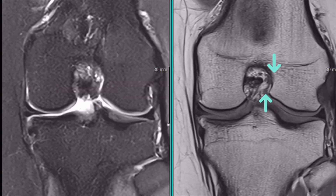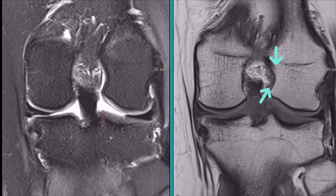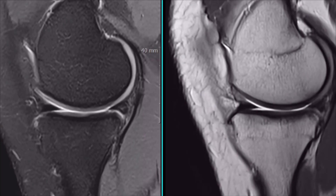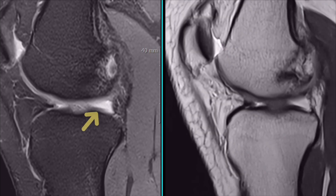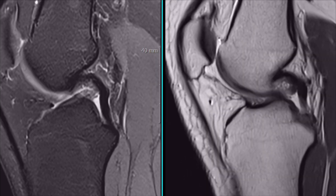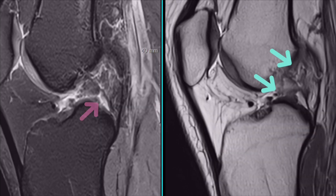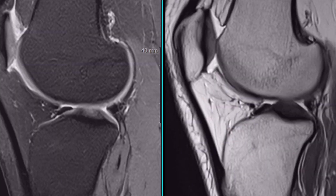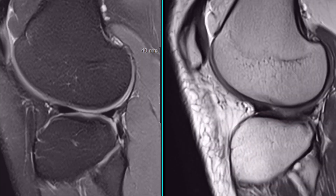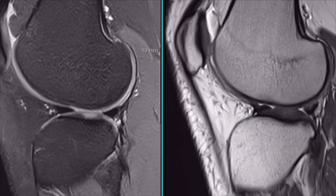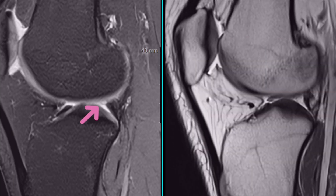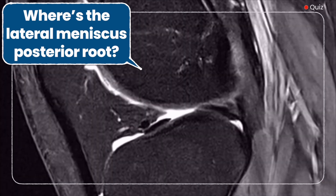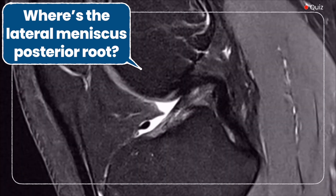Today, we're examining the posterior root of the lateral meniscus. It provides secondary stability in ACL-deficient knees. This structure is challenging to visualize on both MRI and arthroscopy due to its variable attachment sites and unique configuration, making it a frequent diagnostic challenge.